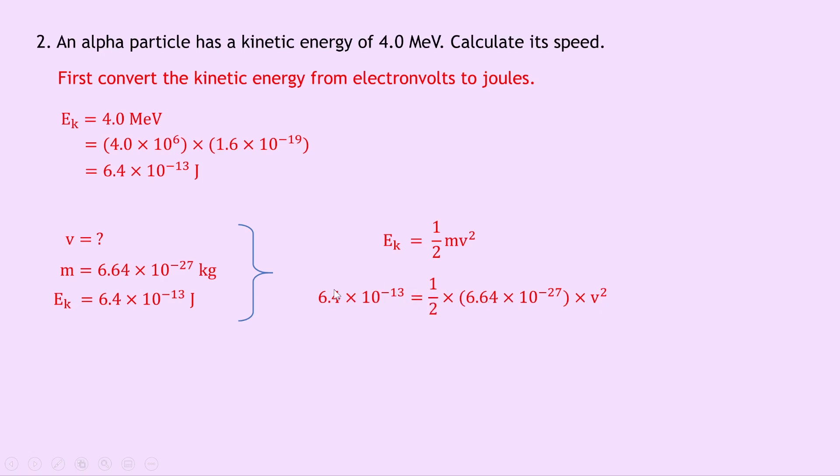If you do that and put it into your calculator you should get a value for V squared, which is V squared equals 1.9 times 10 to the 14. But now we need to square root that to get V on its own. Square rooting both sides gives us V equals 1.4 times 10 to the 7 meters per second.